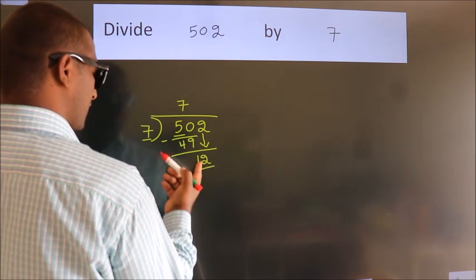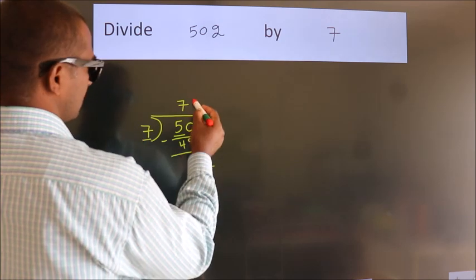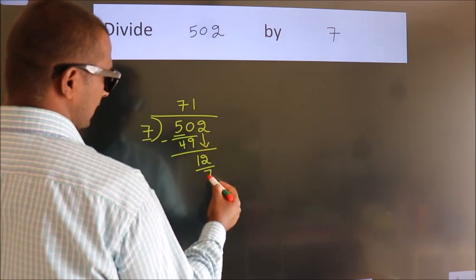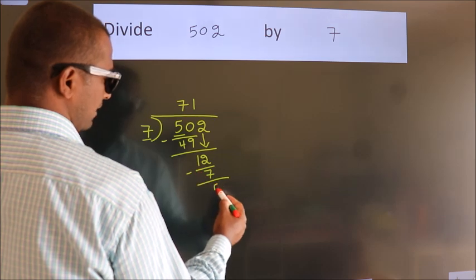So, 12. A number close to 12 in the 7 table is 7 times 1, which is 7. Now we subtract. We get 5.